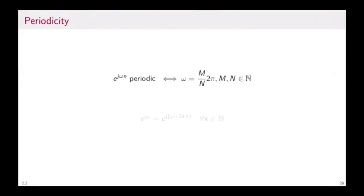What does periodicity mean for a discrete time exponential? e^(jωn) is periodic if and only if ω is equal to a rational factor of 2π, m over n times 2π, where m and n are integers. In this case, we can actually use the fact that if we add a multiple of 2π to the angle of a complex exponential, we are back to e^(jω).